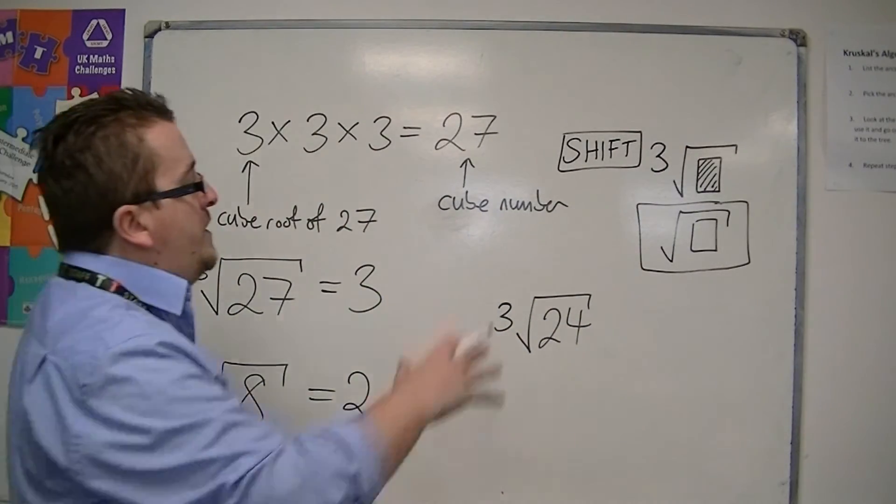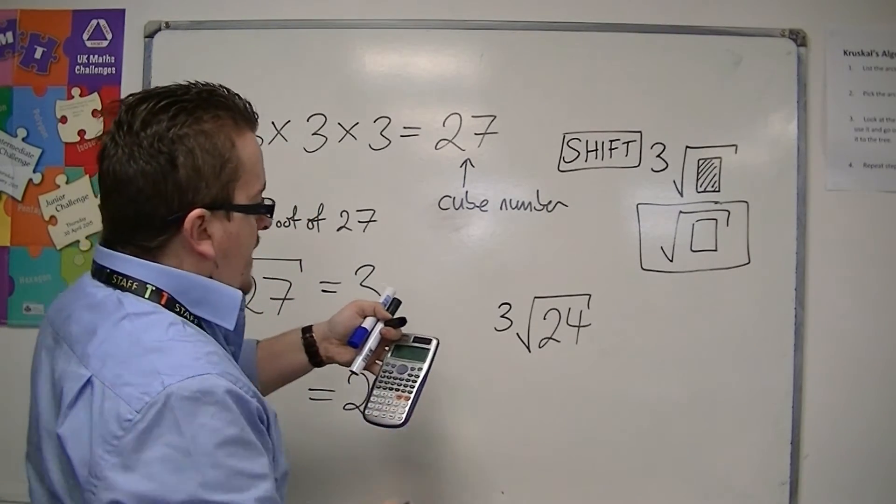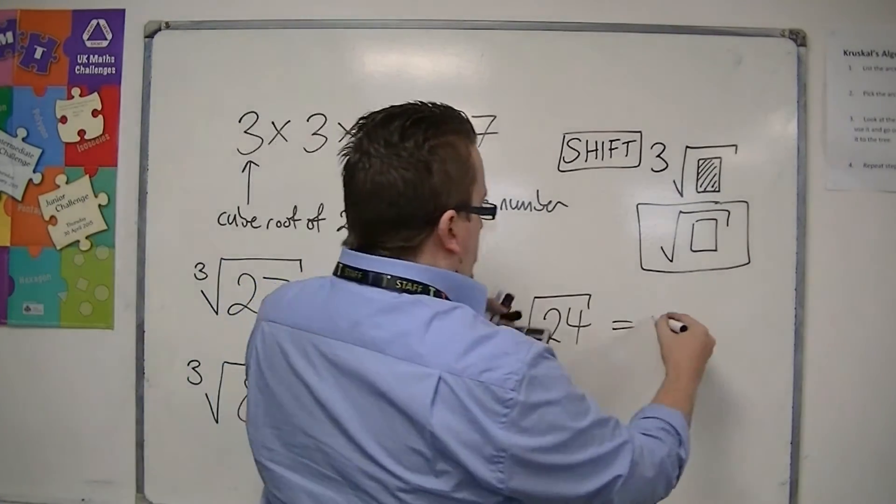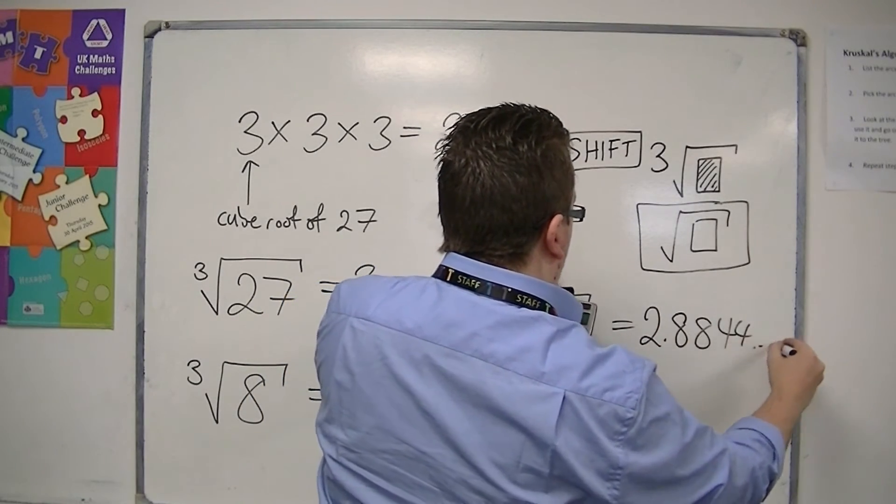So once you've done that, you can then press 24, and then press equals, and you should get something like 2.8844, etc.